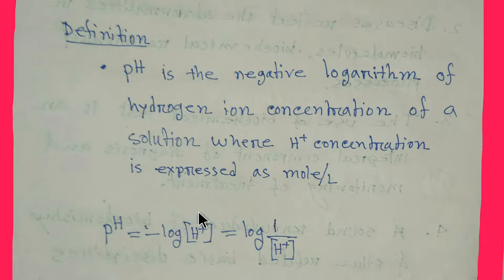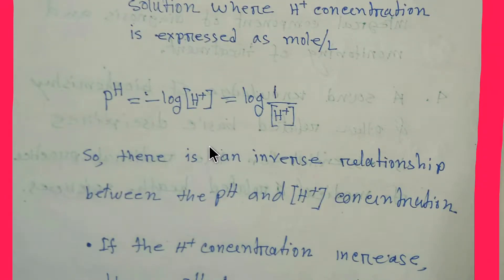You can write this equation like this: pH equals negative log [H+] equals log 1 by [H+]. So pH is the negative logarithm of hydrogen ion concentration of a solution where hydrogen ion concentration is expressed as mole per liter.